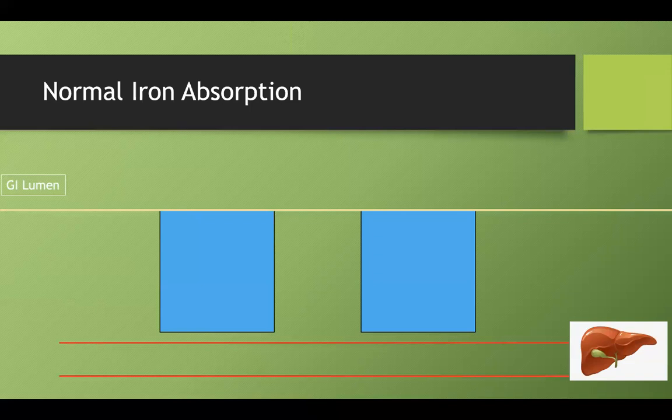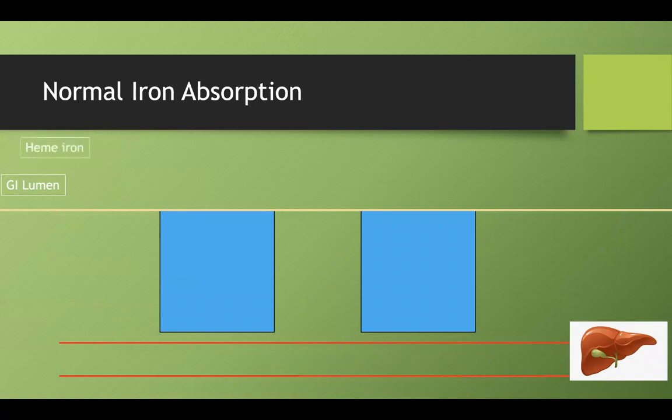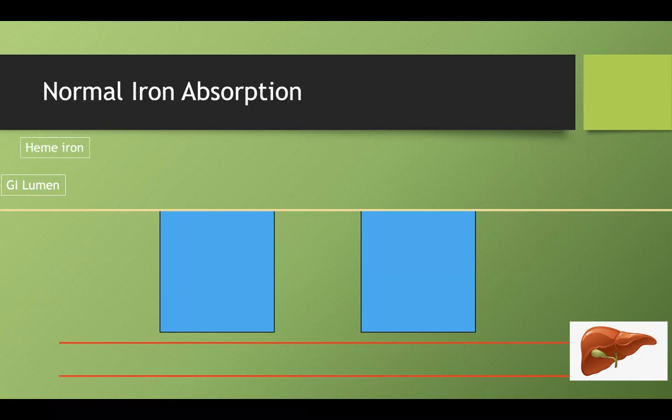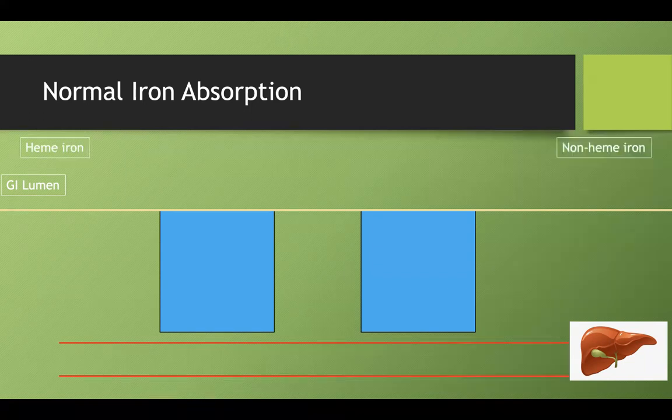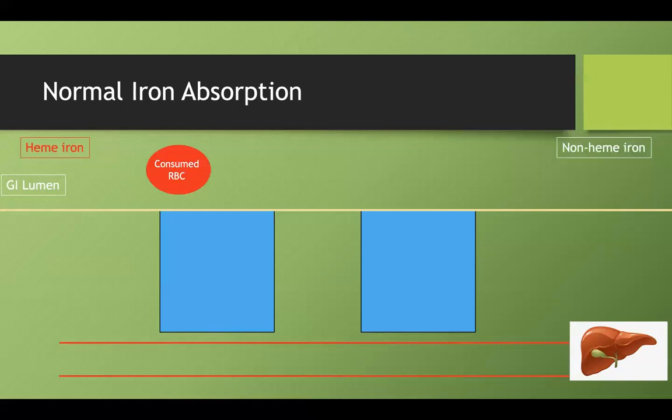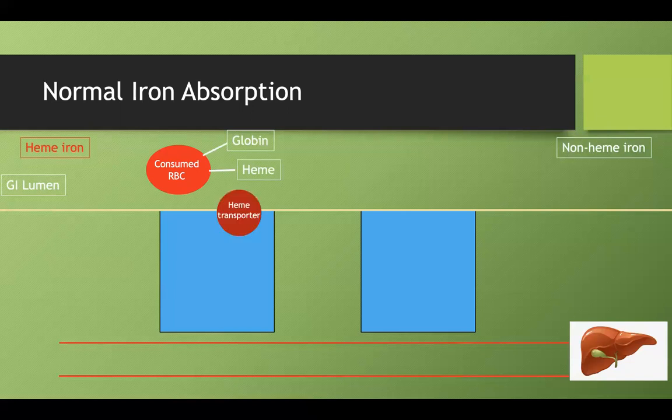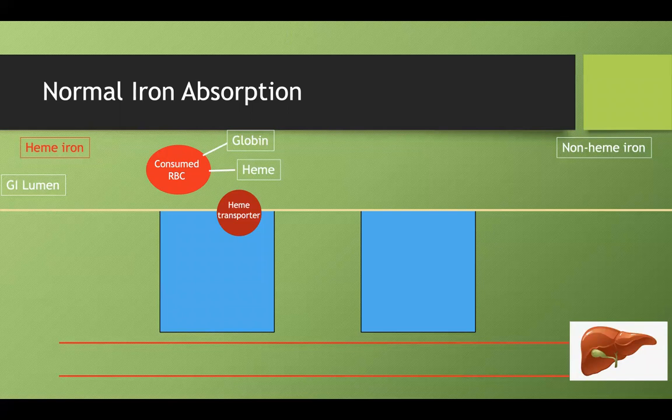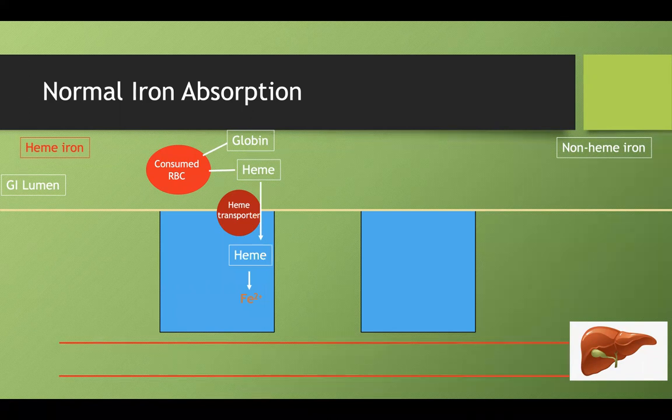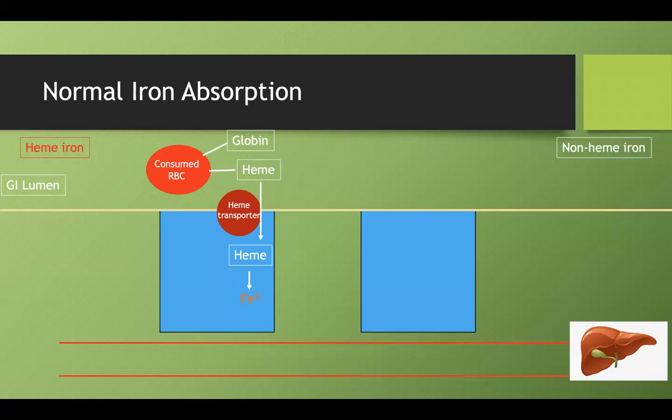On top, we have our GI lumen with duodenal enterocytes, the bloodstream at the bottom, and the liver. There are two different types of iron: heme iron and non-heme iron. Heme iron is the type you usually get from consuming meat products. That meat already has red blood cells with iron and heme. The consumed red blood cell will have heme and globin, and that heme can be transported into the enterocyte through a heme transporter. From there, the heme can be broken down and the iron extracted as Fe2+.